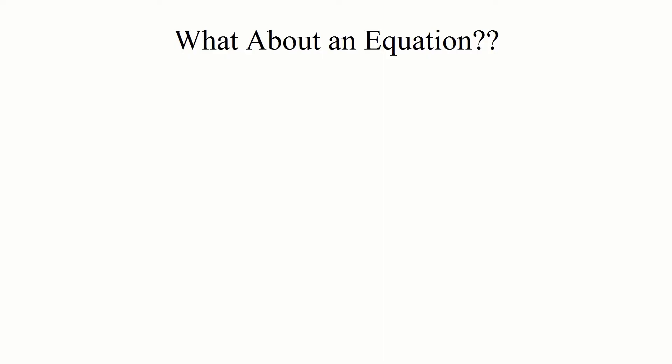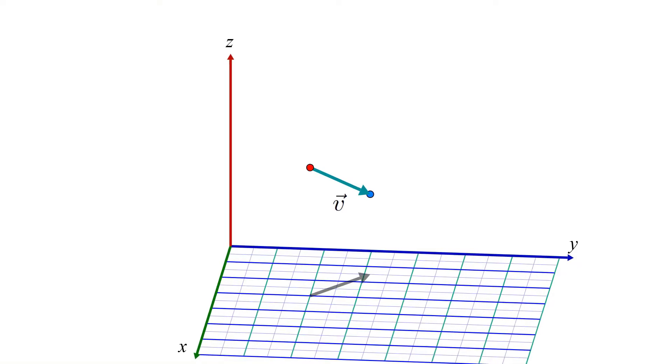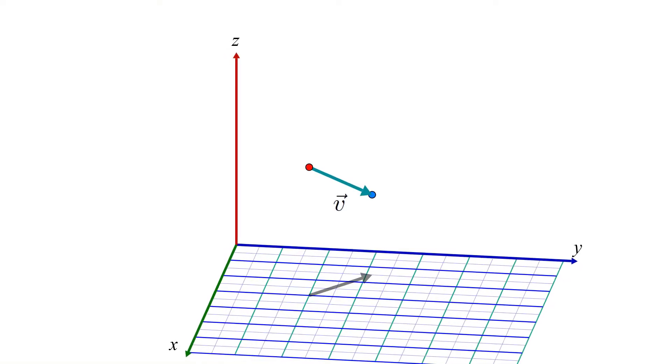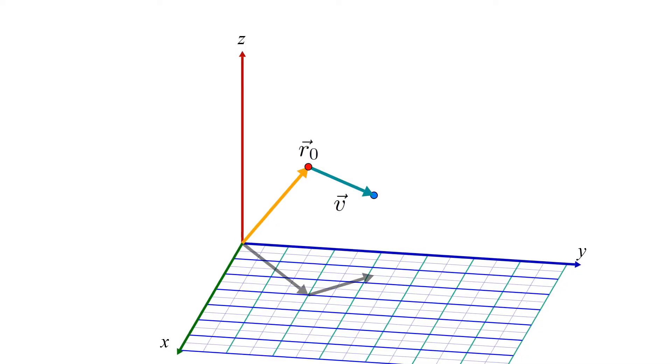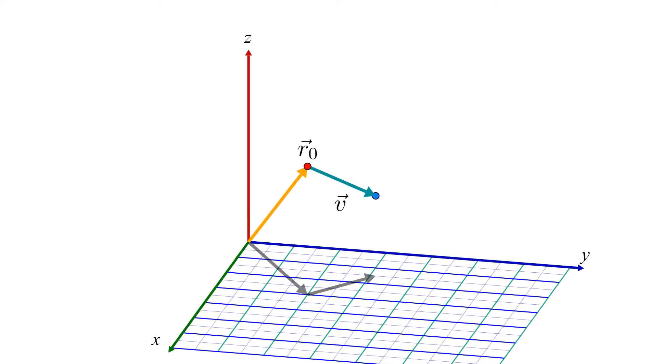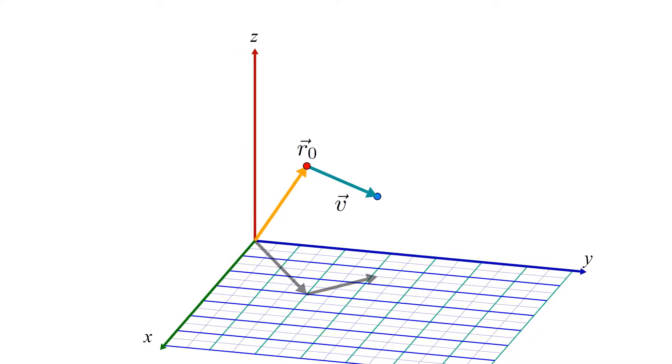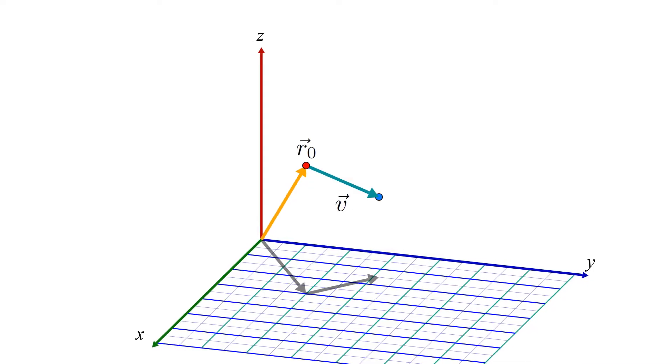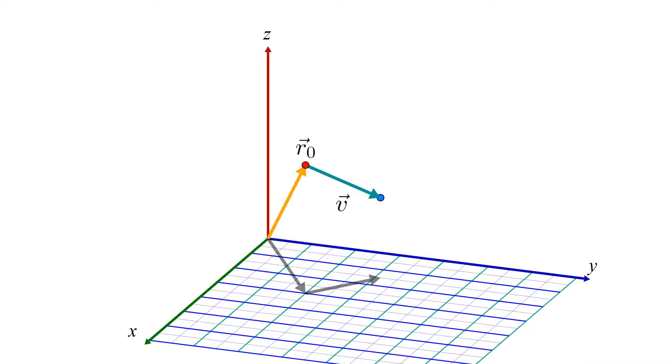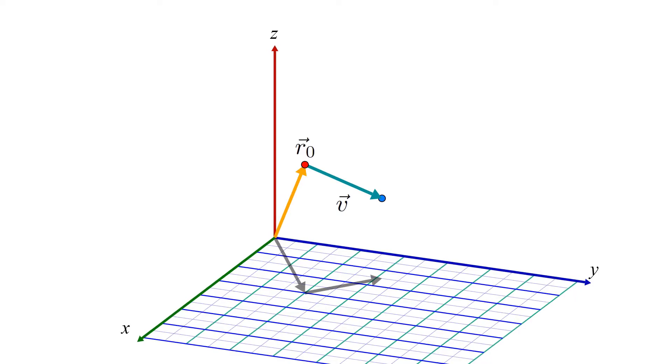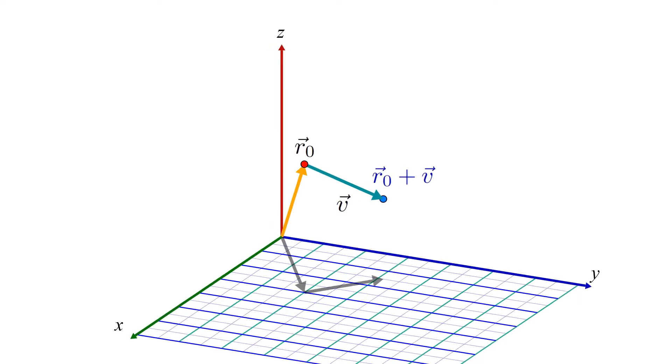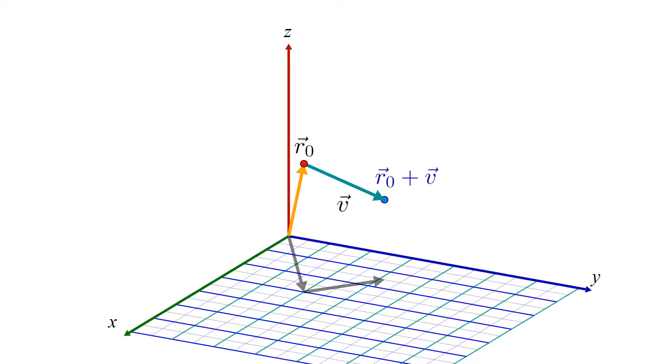This is where it pays off to think of r0 as a vector instead of just a point, because this allows us to do arithmetic like adding and scaling. We can treat any point in space as being equivalent to a vector whose tail sits at the origin and whose tip touches the point in question. This gives us a handy way to express this blue point on the line. Since the r0 and v vectors are placed tip to tail, it means the blue point can be represented by the vector r0 plus v.